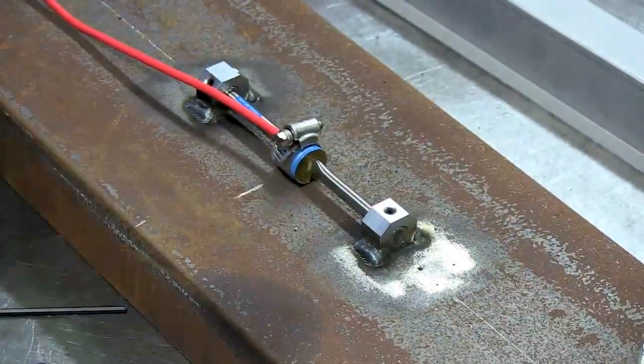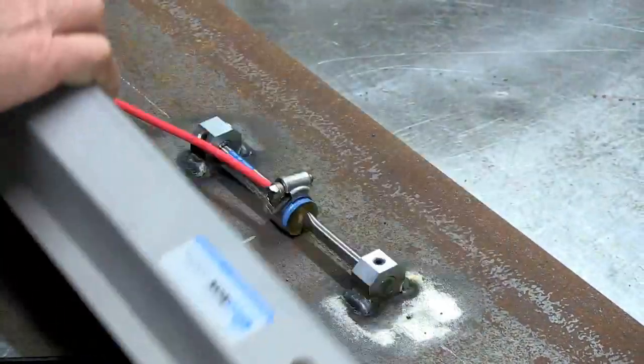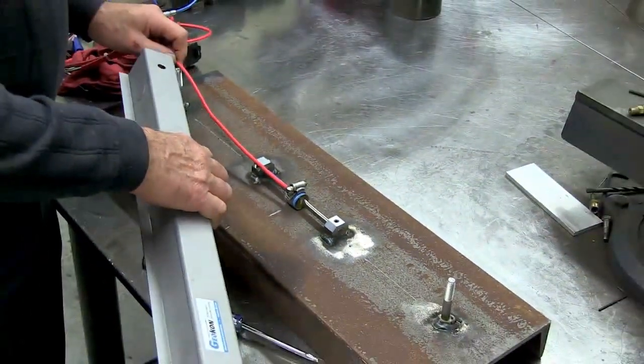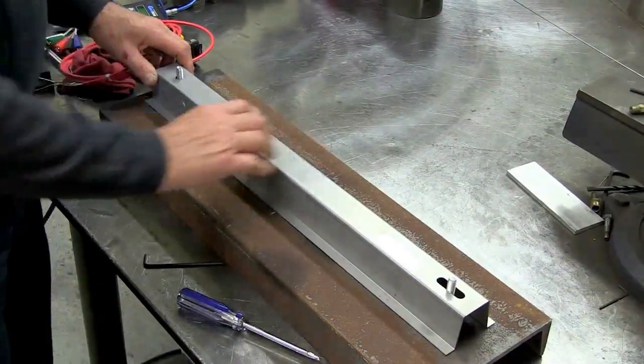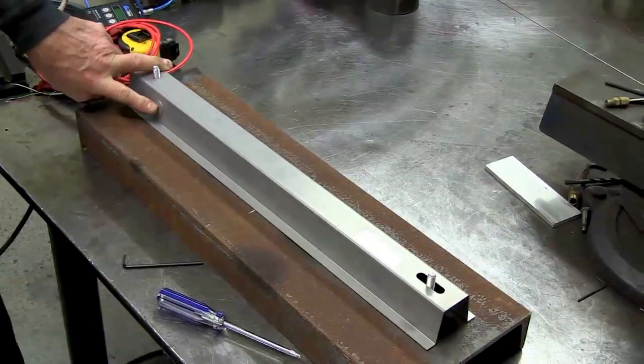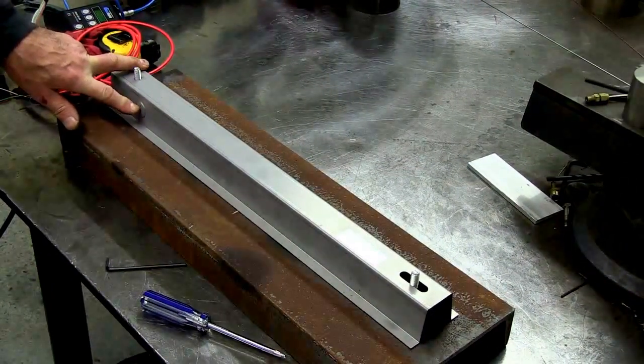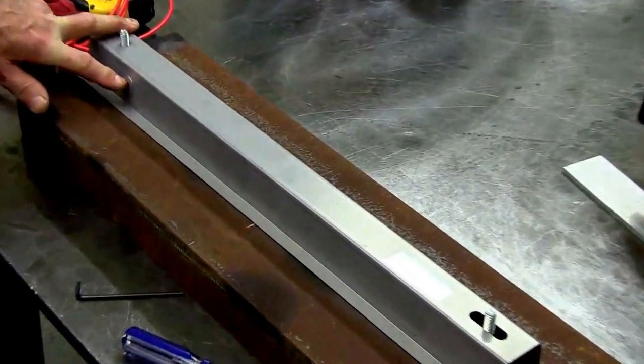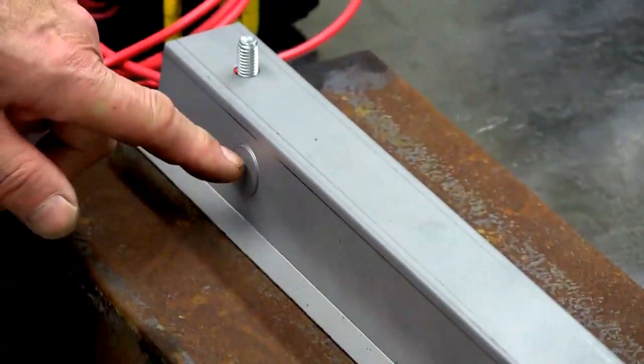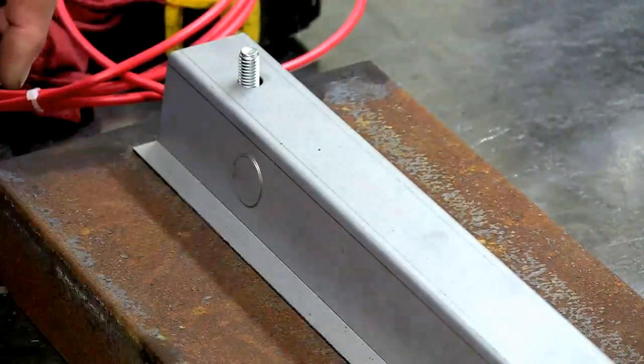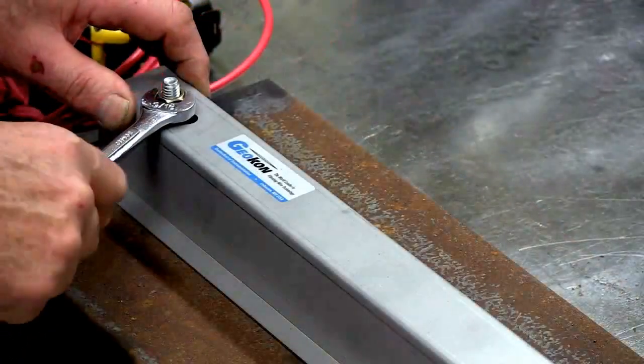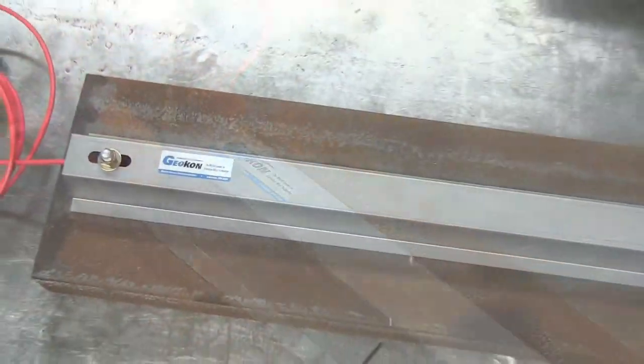The next and final step is to attach this cover plate. Make sure you get the wire coming out of the end. Or, alternatively, there's what's called a knockout right here. This can be used if you want to use electrical conduit. You take the knockout out and the conduit fitting goes in there. You run the cable through the conduit. That's it. The job's done. You're ready to go.